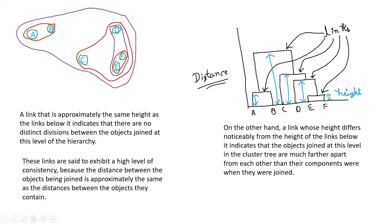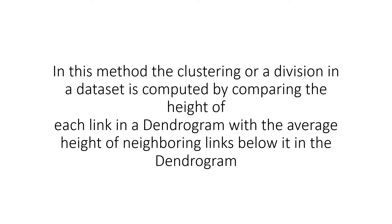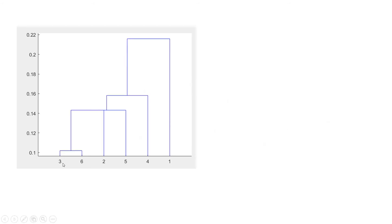This concept we can use for determining the best possible number of clusters to form — and here comes the concept of inconsistency. Clustering is essentially a division of a data set into multiple groups, just like in k-means where customers are divided into five groups: low income/low spending, high income/high spending, and so on. Inconsistency is computed by comparing the height of each link in a dendrogram with the average height of neighboring links below it — below is very important, not all links in the dendrogram.